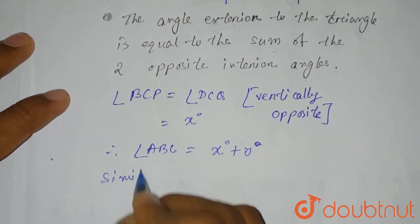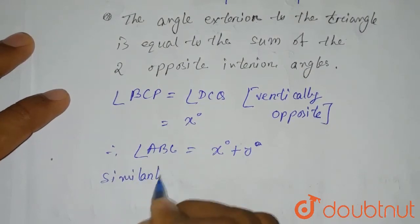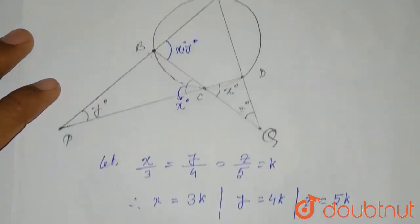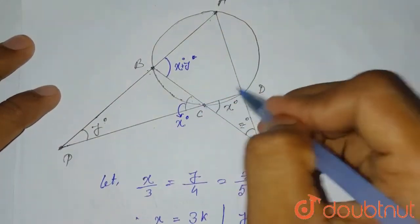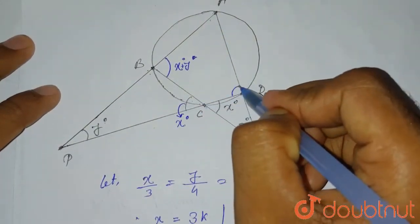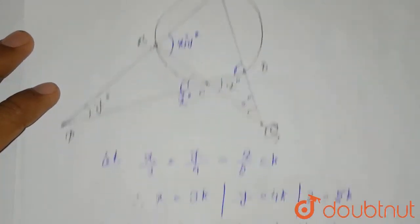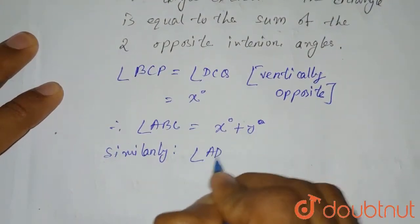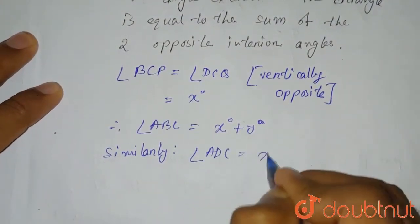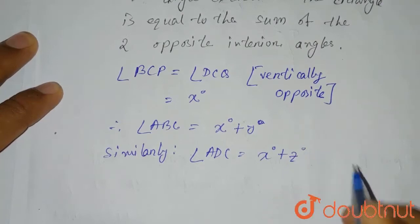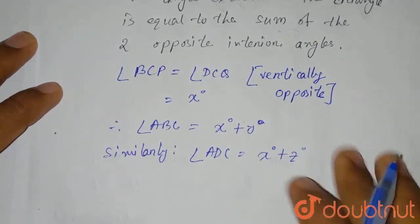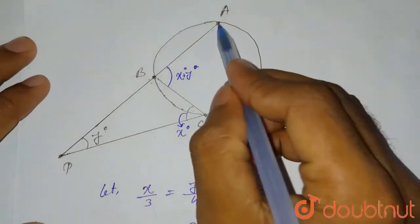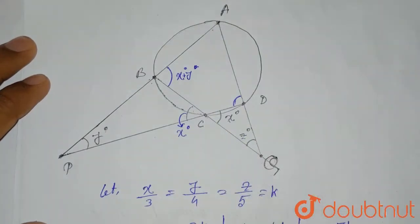Similarly, angle ADC = x degrees + z degrees.